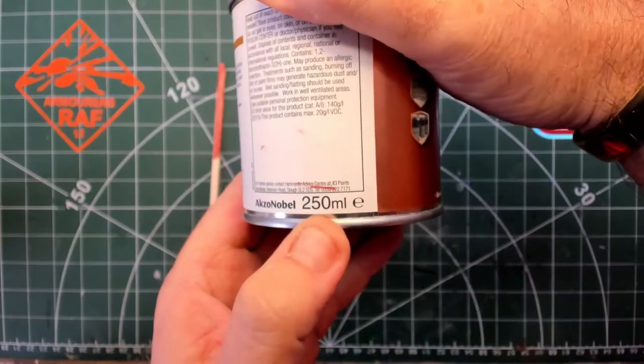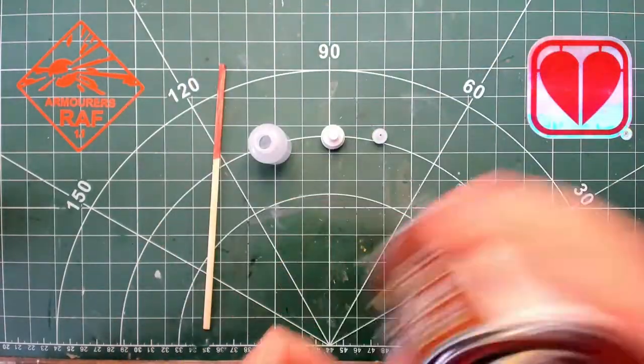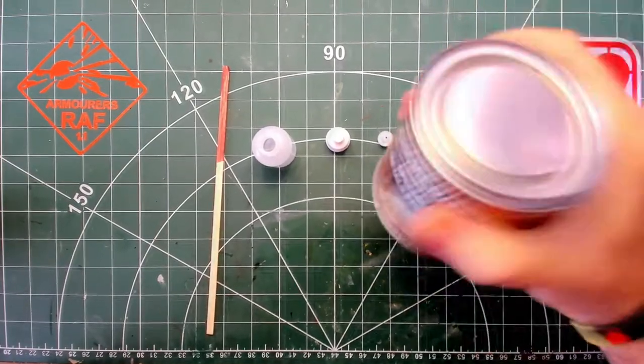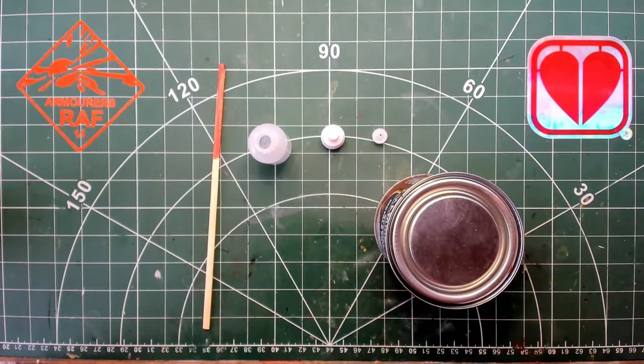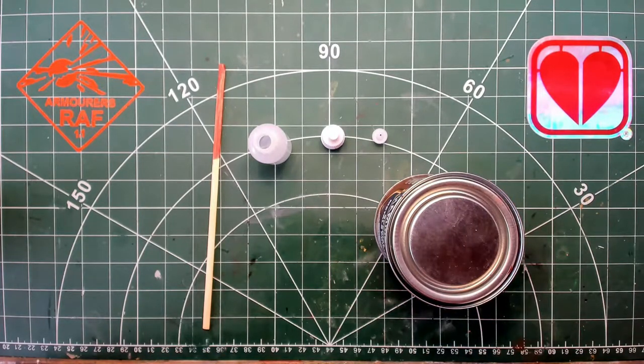We can make half a litre of metal primer for about six quid now. This will be a short video as I've already made some, so let's crack on.